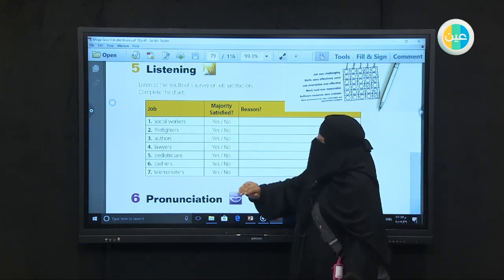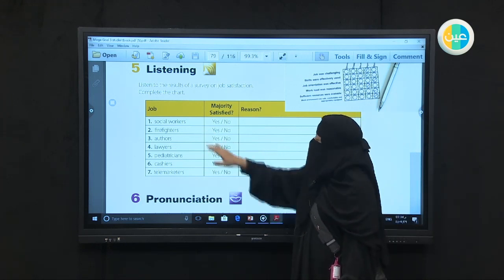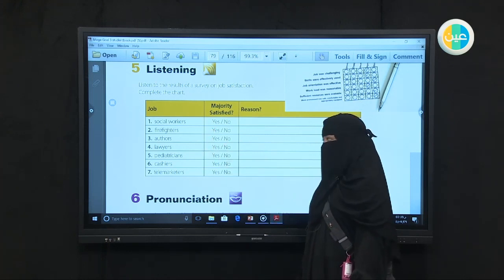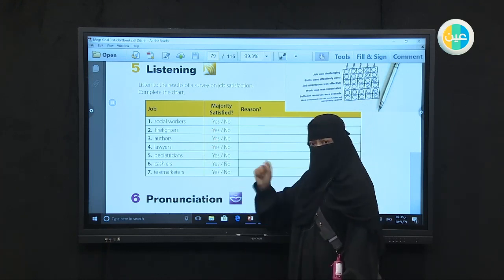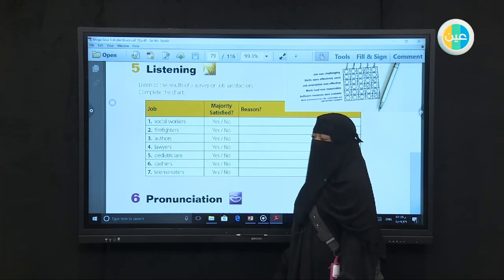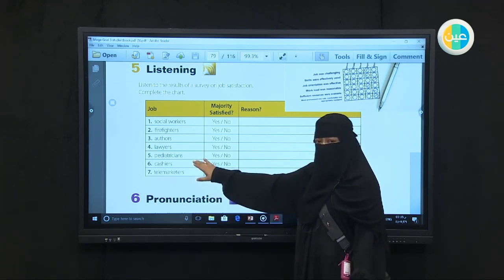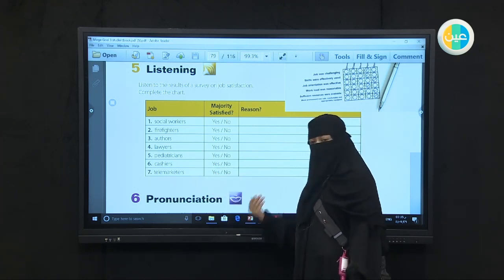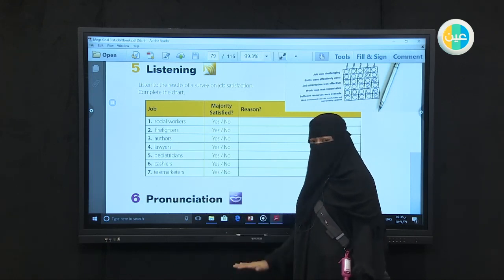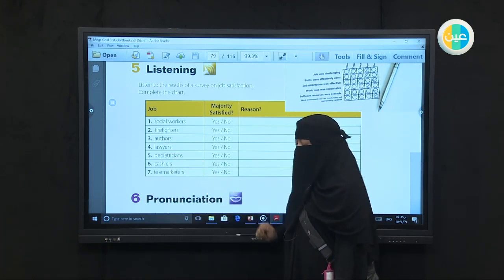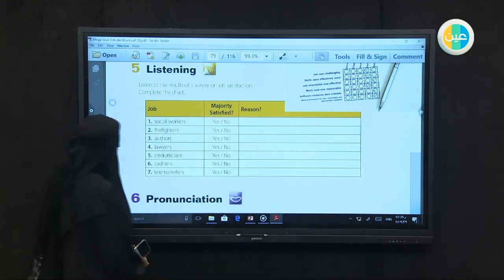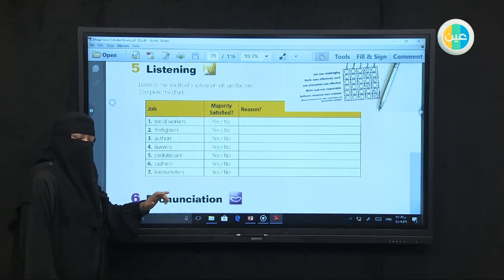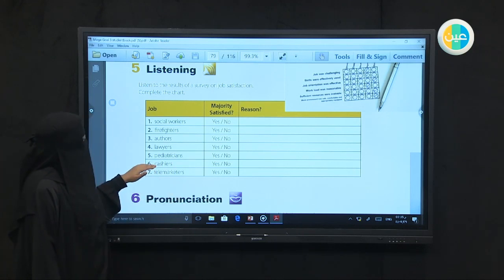Number one, social workers. Number two, firefighters. Number three, authors, writers. Number four, lawyers. Number five, pediatrician. Again, pediatricians. Pediatricians is a doctor, but he is a doctor for children. Pedos. Alright. Number six, cashier. This is number six. Number seven, telemarketer.